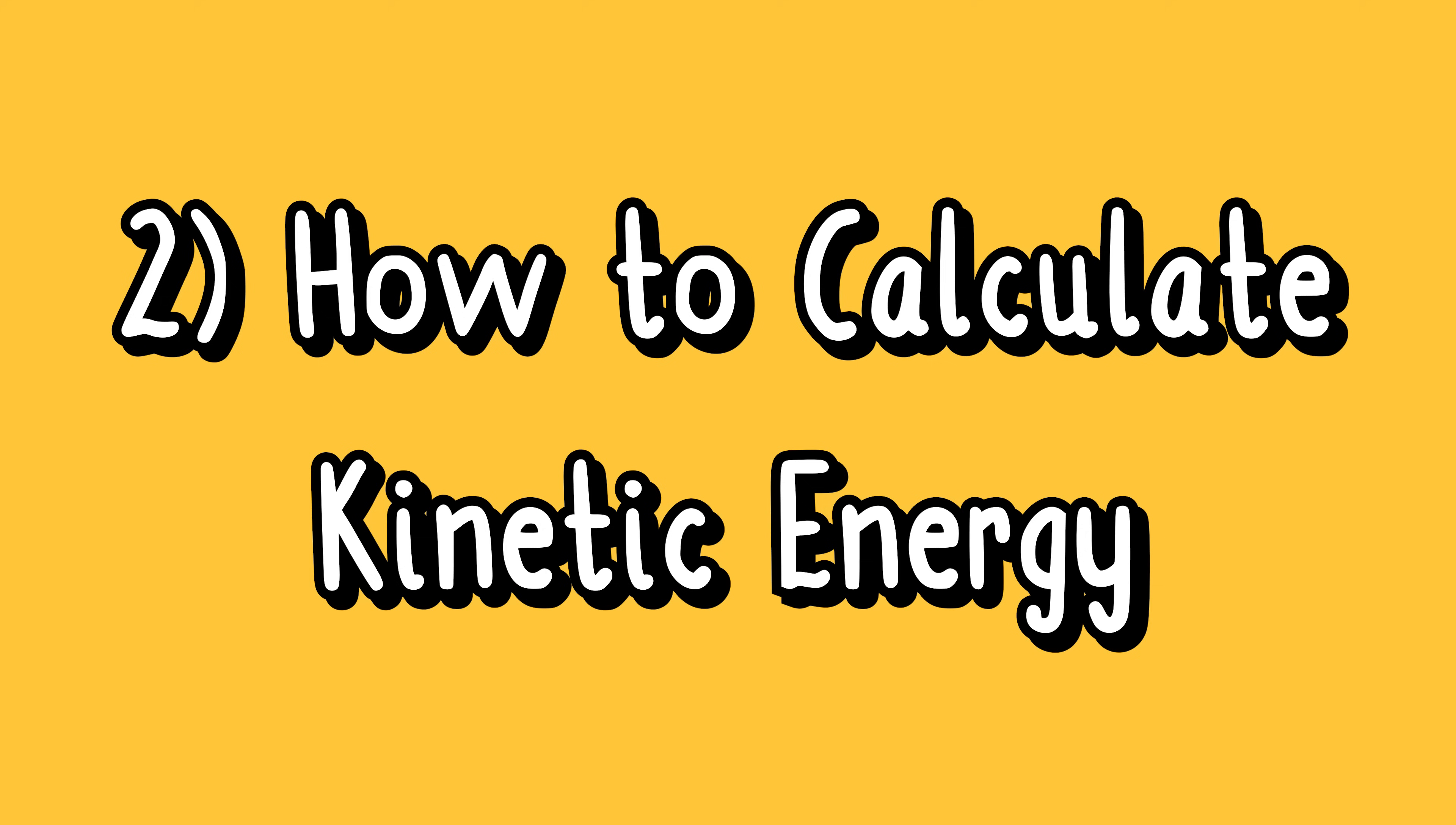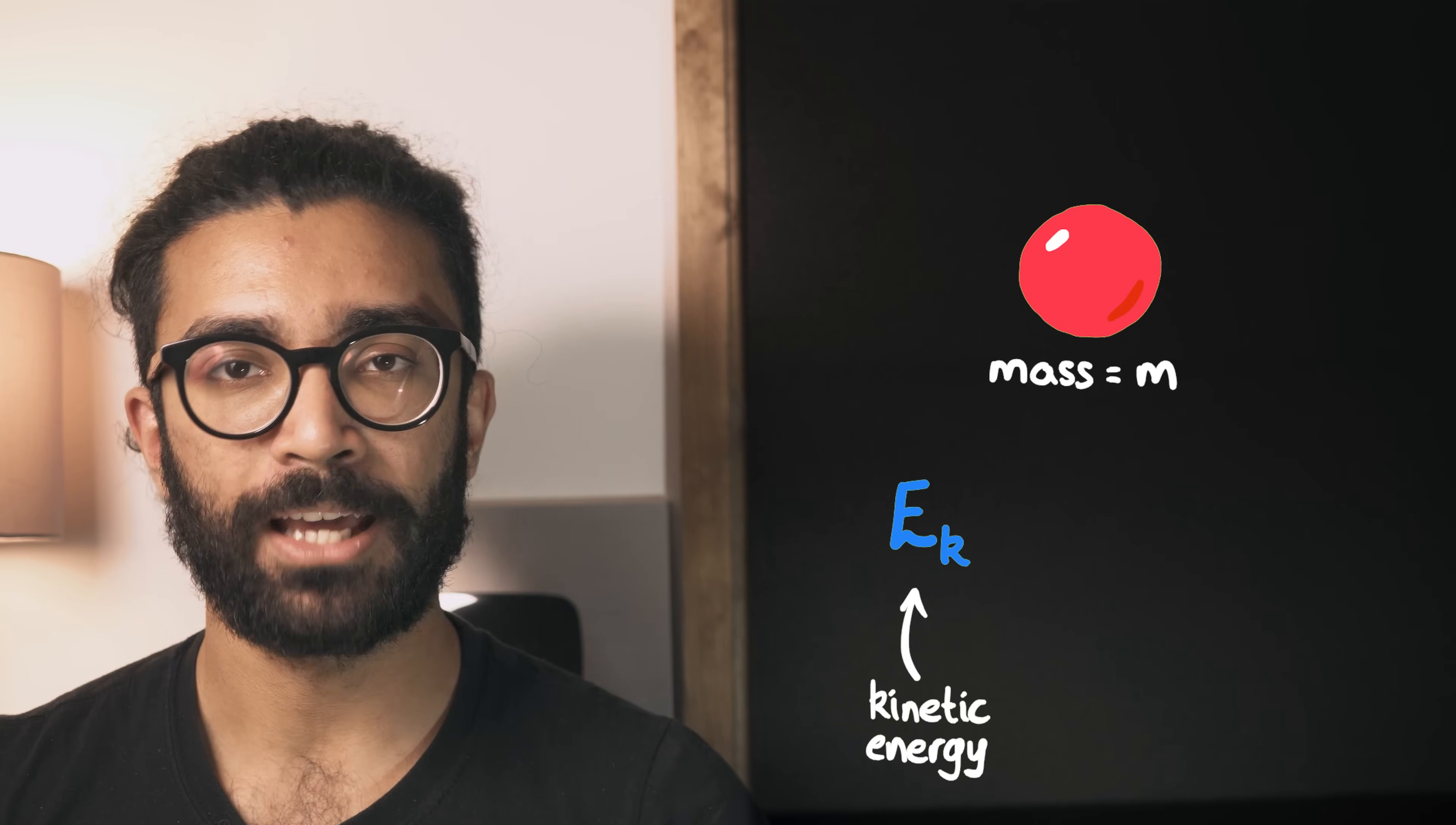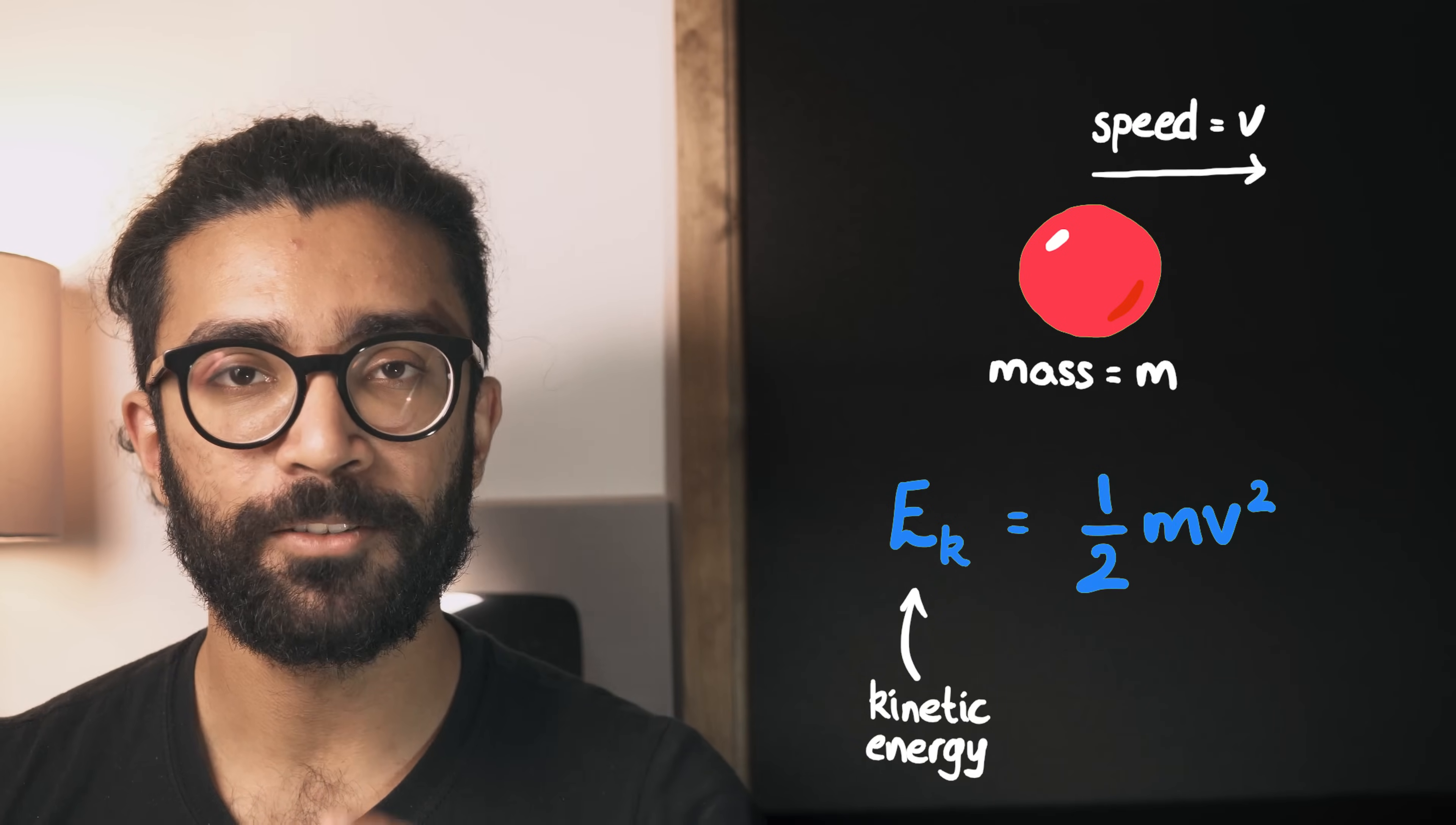Level two. So it's all well and good saying that a moving object has kinetic energy. But exactly how much kinetic energy does it have? Well there's a convenient equation that tells us exactly this. The kinetic energy of an object that has mass m and is moving with a speed v is equal to one half mv squared.